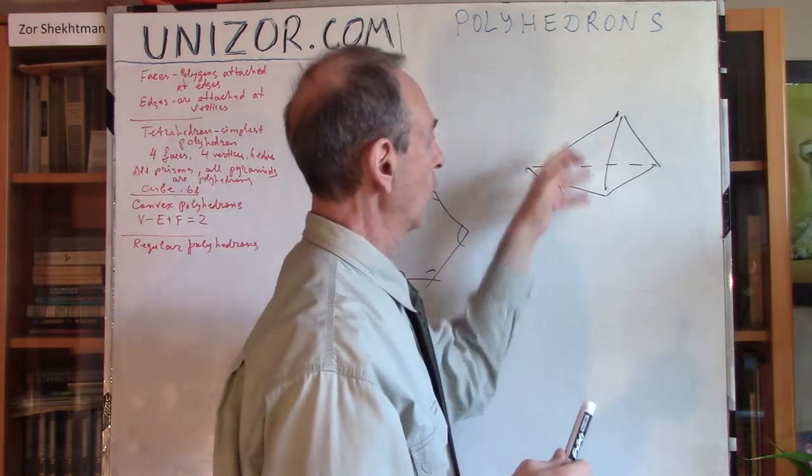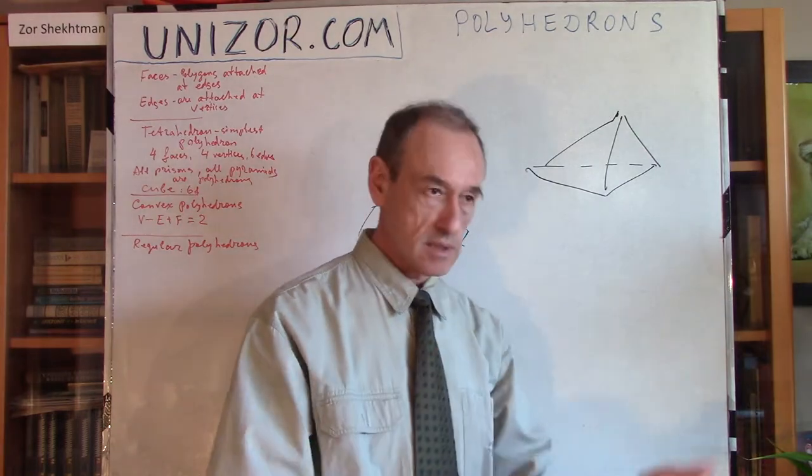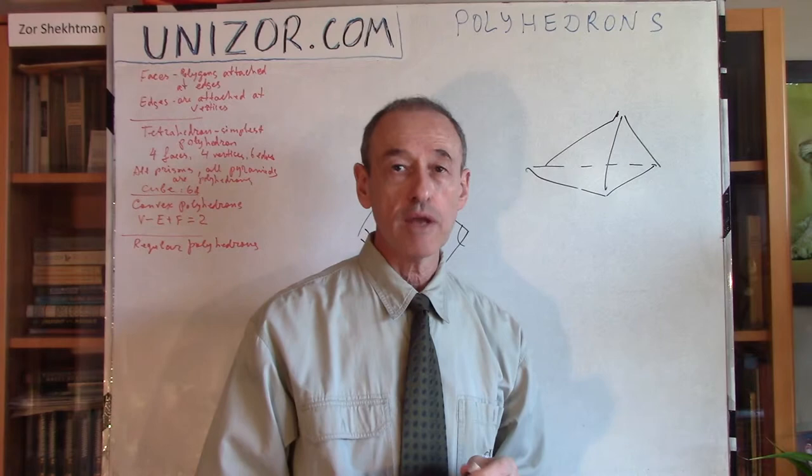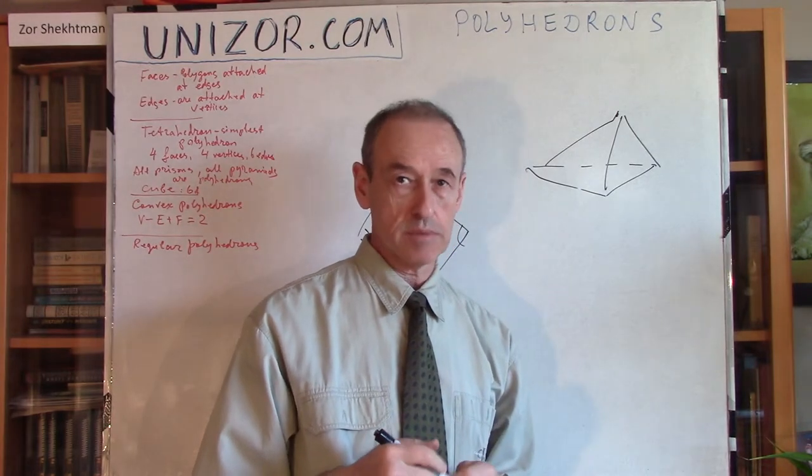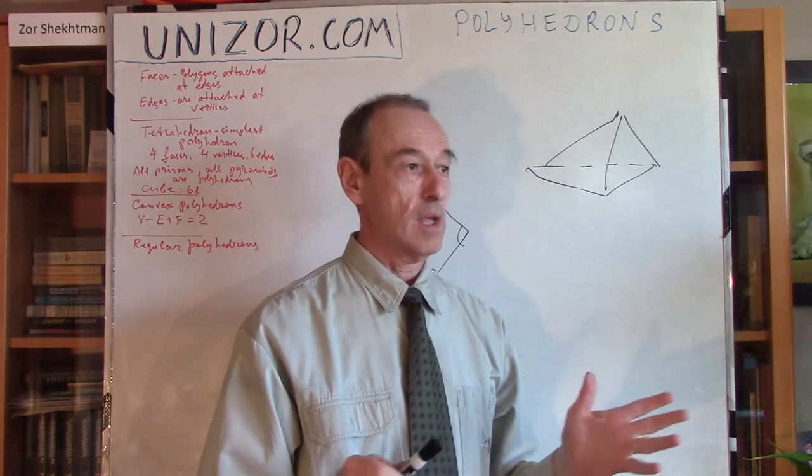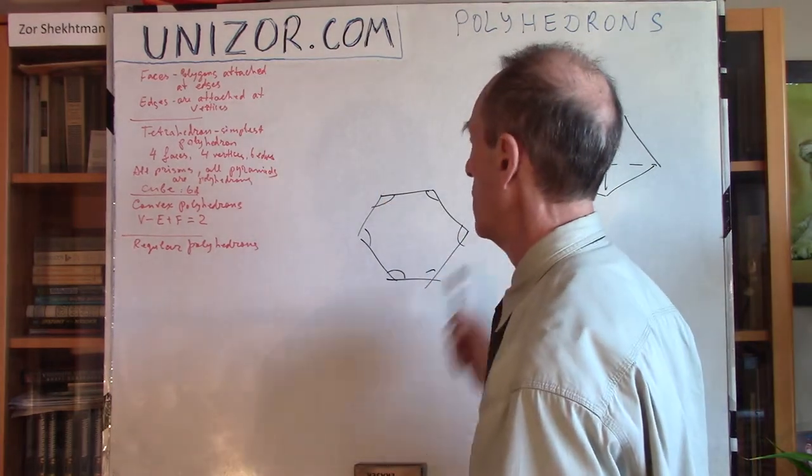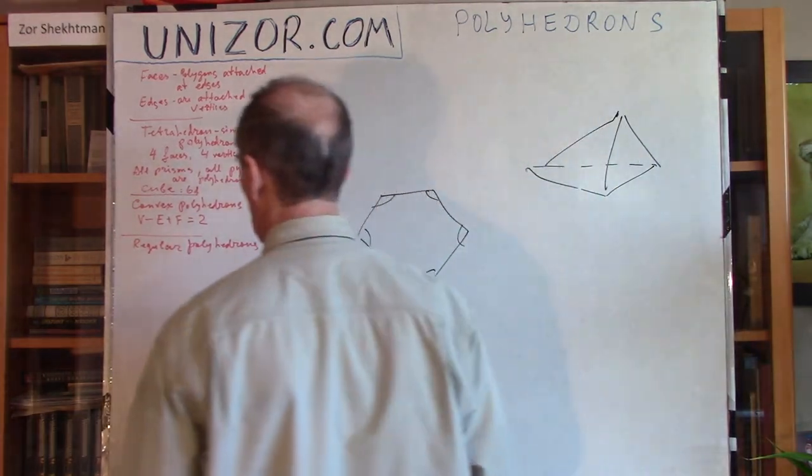So, again, we have all faces the same, as a consequence, all edges are the same, and all three-dimensional angles between the planes must be the same. That actually is sufficient to call this polyhedron regular.